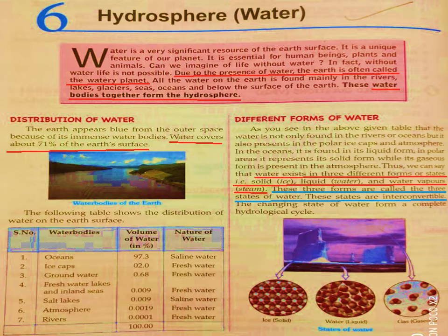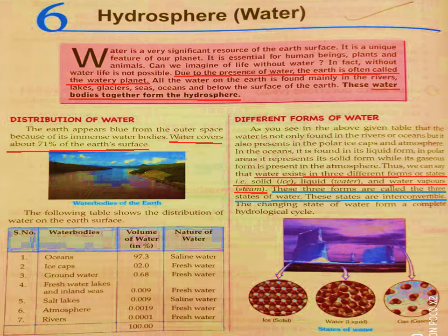These three states of water are interconvertible — meaning they can change into all three forms. Solid can change into liquid; water can change into ice or into water vapour; and water vapour can again change into water. These three states of water together form a complete hydrological cycle, which we will discuss now.